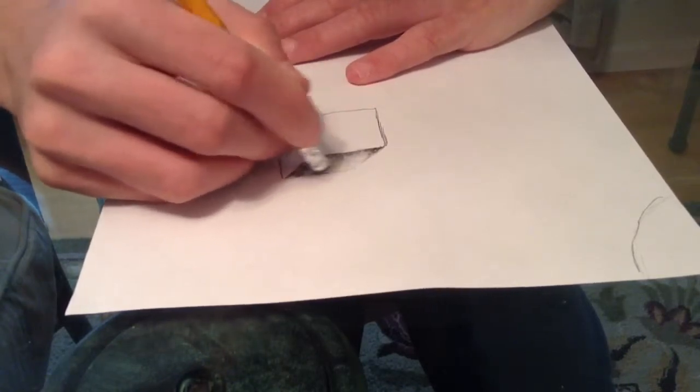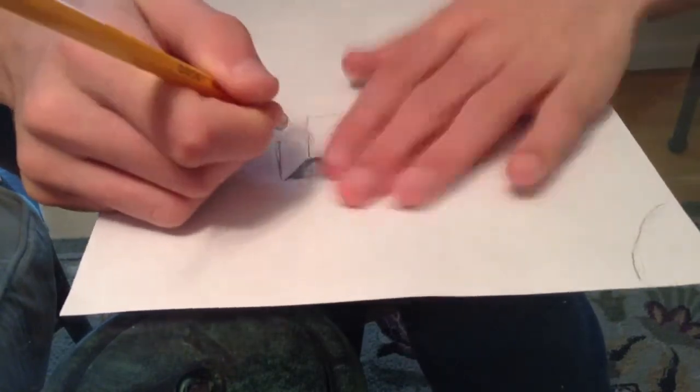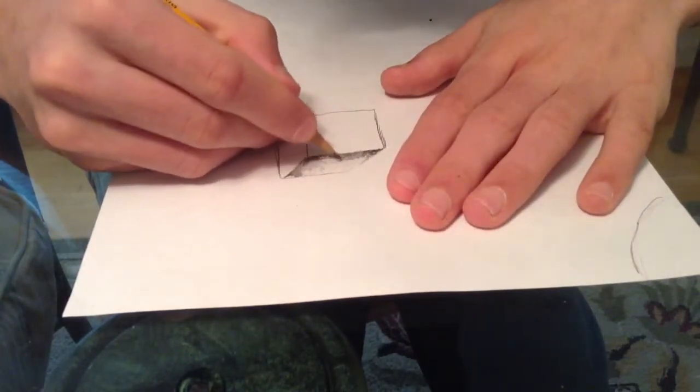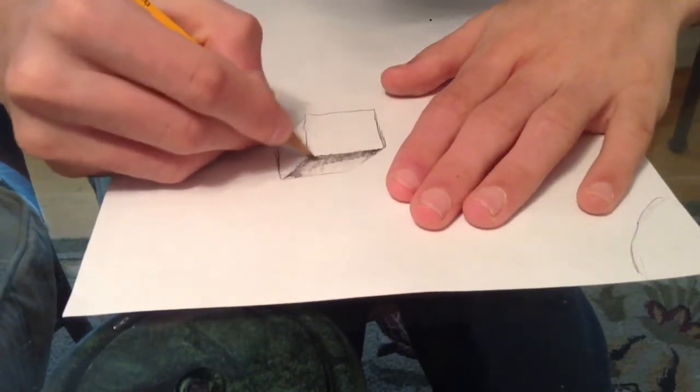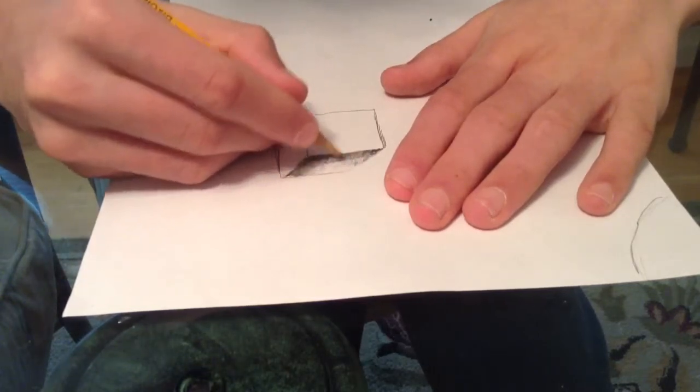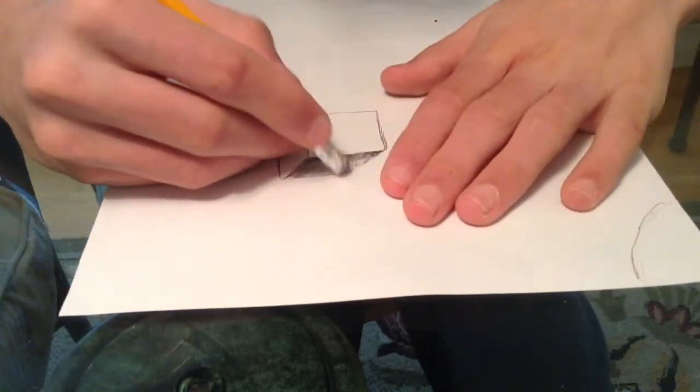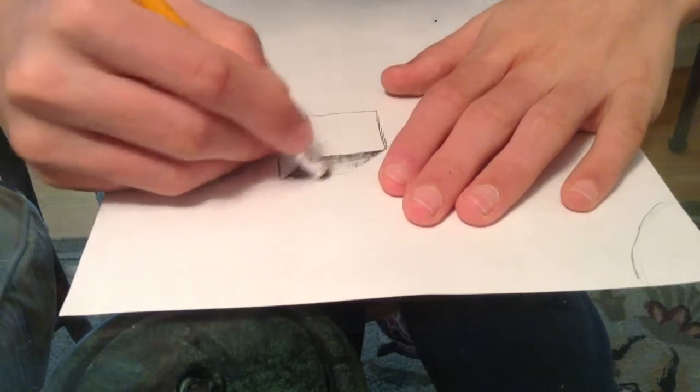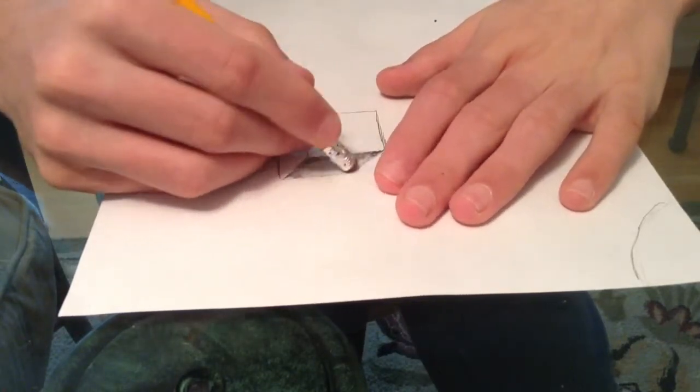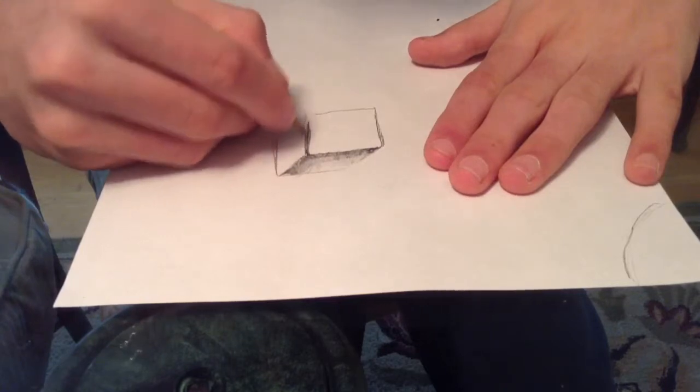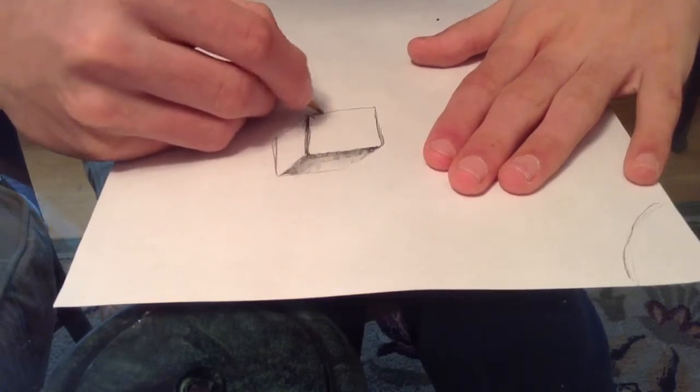Just blend everything in. Make everything darker if you need to. Make some stuff lighter if you need to.